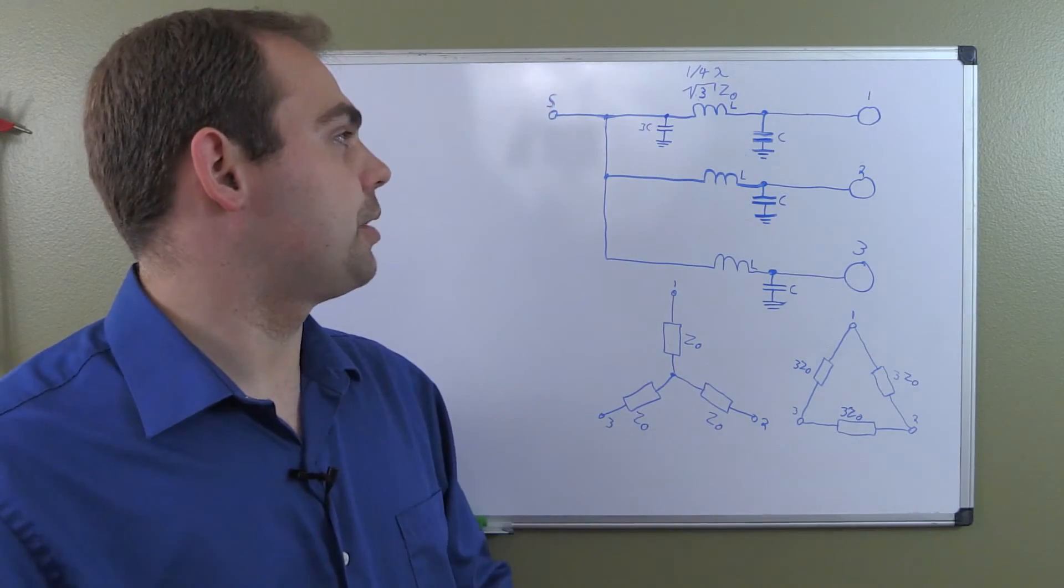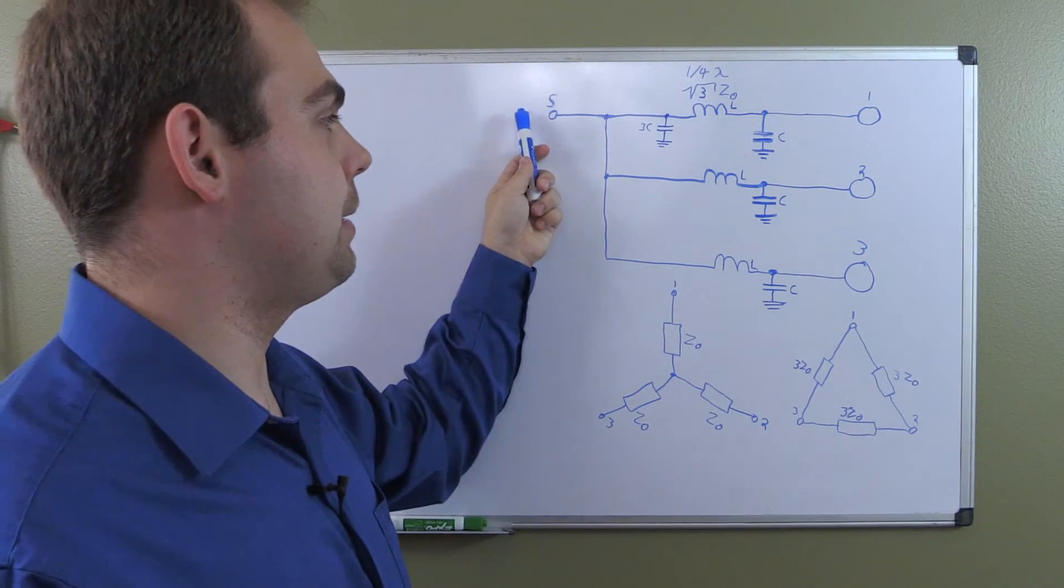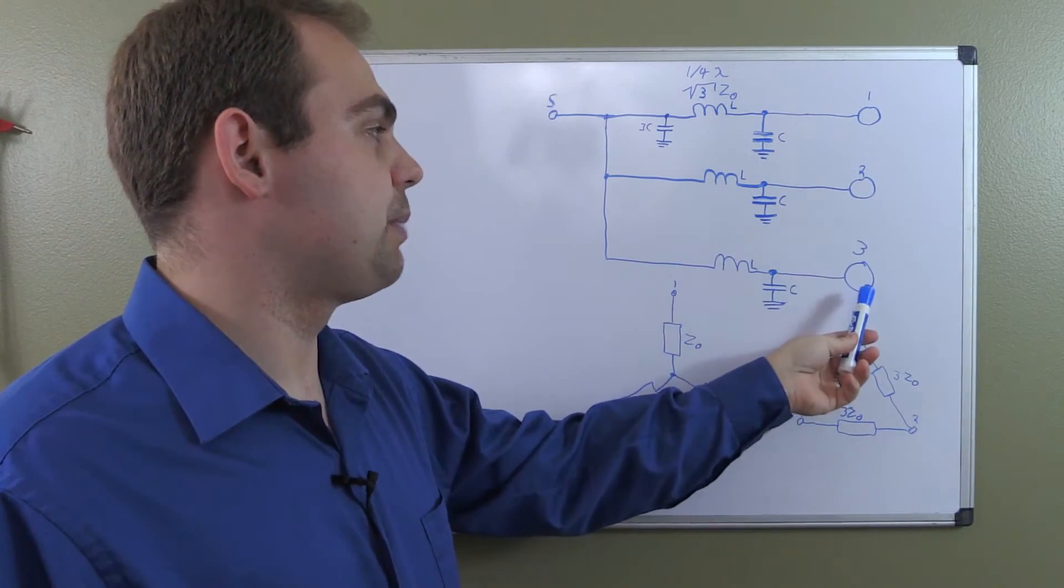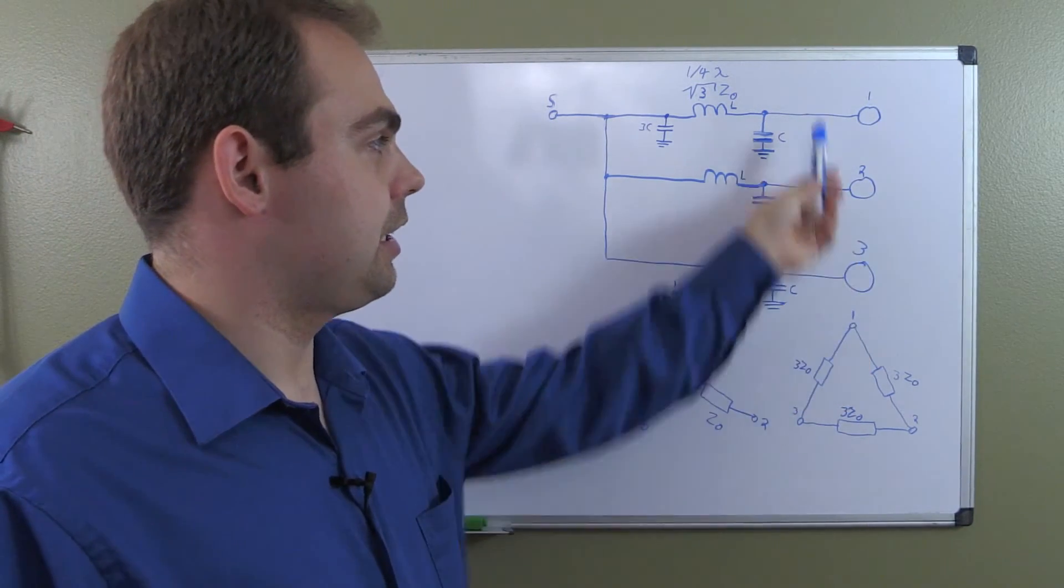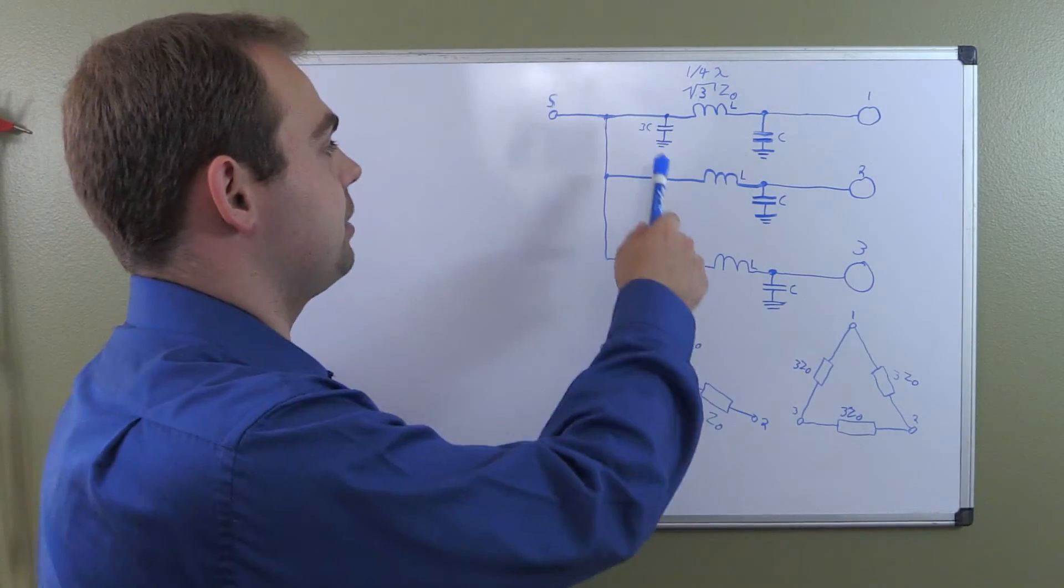Now behind me, you see I started drawing a three-way Wilkinson. We've got our sum port or common port over here. Then we've got three split ports right here. And I left the resistors out. We're going to talk about them in a moment. But for starters, it's nothing new.